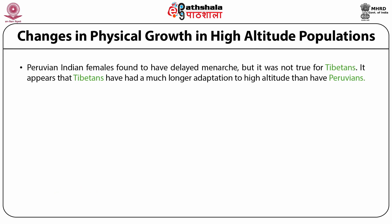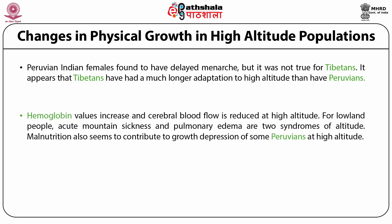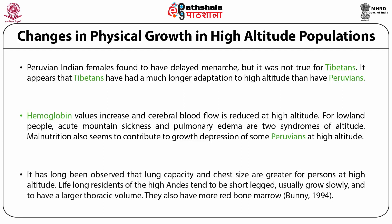Peruvian Indian females were found to have delayed menarche, but this was not true for Tibetans. It appears that Tibetans have had a much longer adaptation to high altitude than the Peruvians. Hemoglobin values also increase and cerebral blood flow is reduced at high altitude. For lowland people, acute mountain sickness and pulmonary edema are two syndromes of altitude. Malnutrition also seems to contribute to the growth depression of some Peruvians at high altitude. It has long been observed that lung capacity and chest size are greater for persons at high altitude. Lifelong residents tend to be short-legged, usually grow slowly, and have a larger thoracic volume. They also have more red bone marrow.